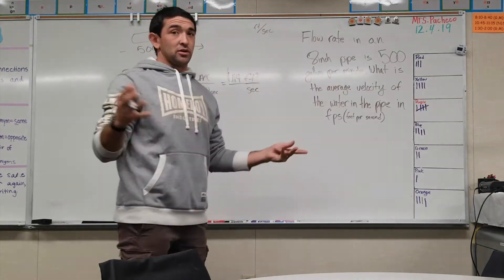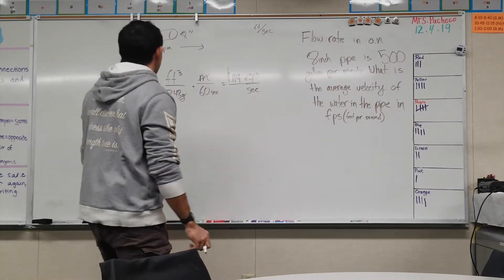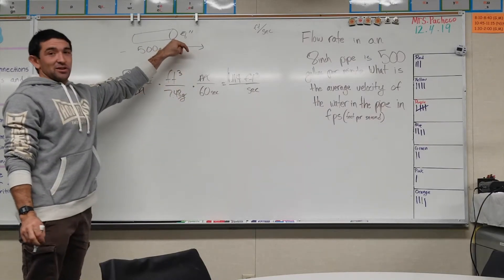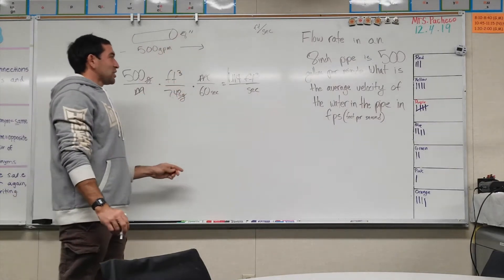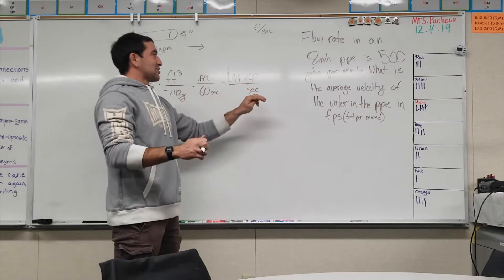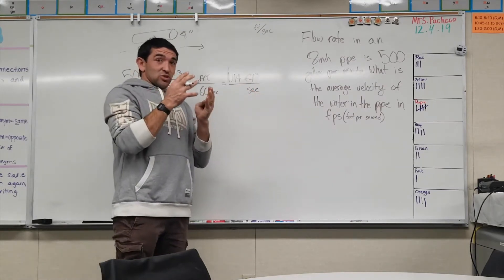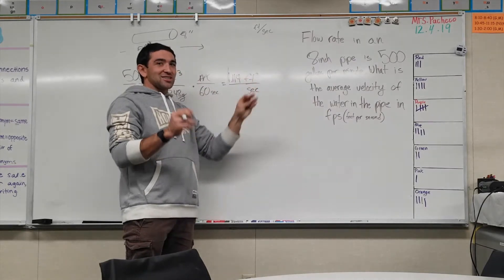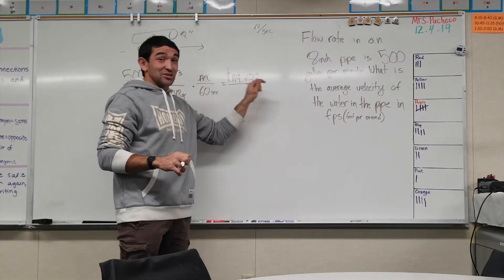Let's take the second thing we know, which is the diameter of that pipe, and we can get it to square foot and cancel out the cubic feet here to just make one.